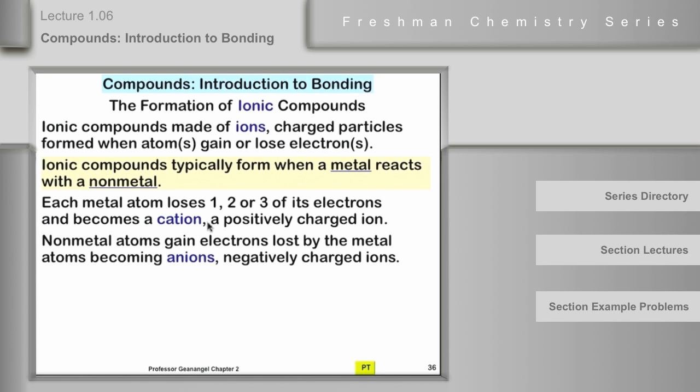Now, implicit in these statements are that in the formation of the compound, once the metal loses some electrons, the nonmetals are going to gain those electrons. No electrons are going to get lost and go off into the ether somewhere. So there'll be a balance between the number of electrons lost by the metal and those gained by the nonmetal within the formula for that compound.